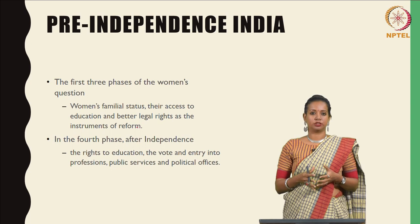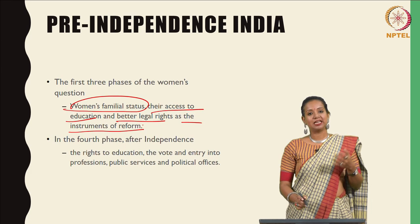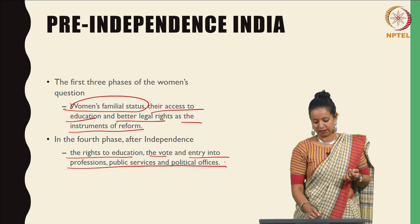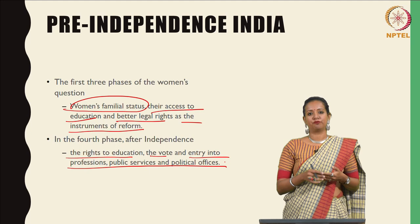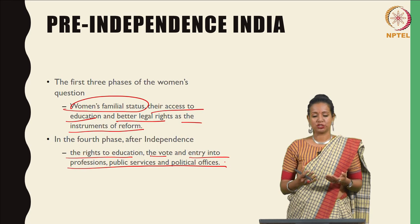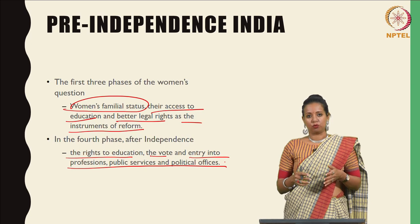The first three phases of the women's question were about women's familial status, their access to education, and better legal rights as the instruments of reform. In the fourth phase, after independence, women automatically gained rights to education, the vote, and entry into professions, public services, and political offices. As we saw in the discussion on the first wave, so many countries were so late to give women the vote that it was natural for the Indian national state to think it had solved the women's question.